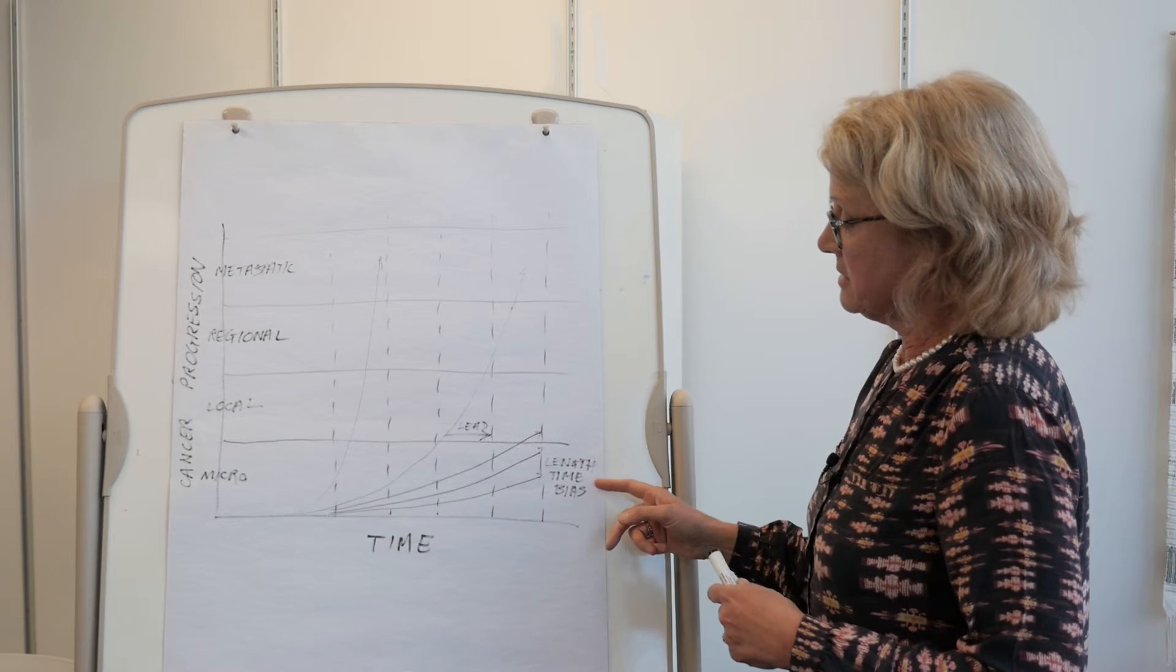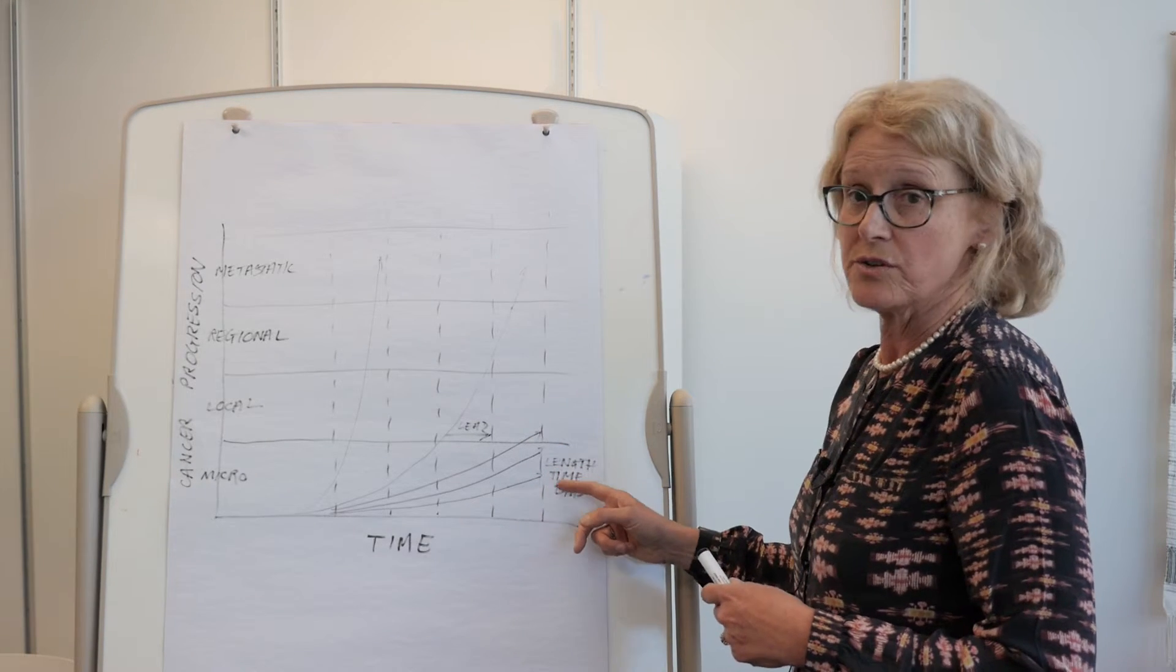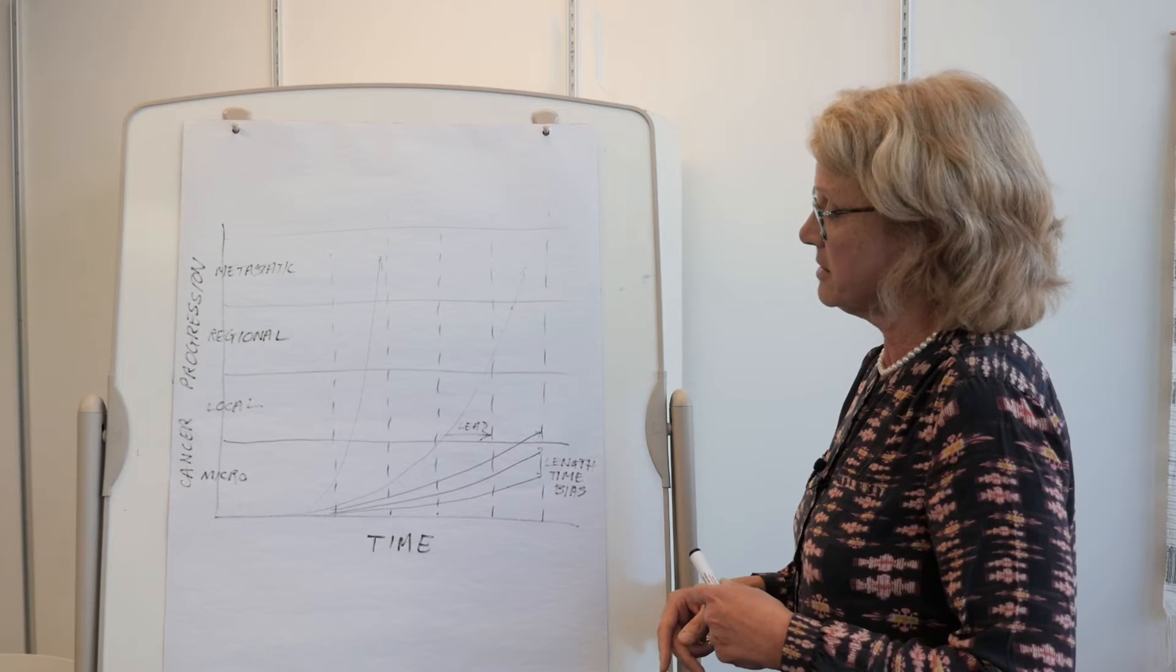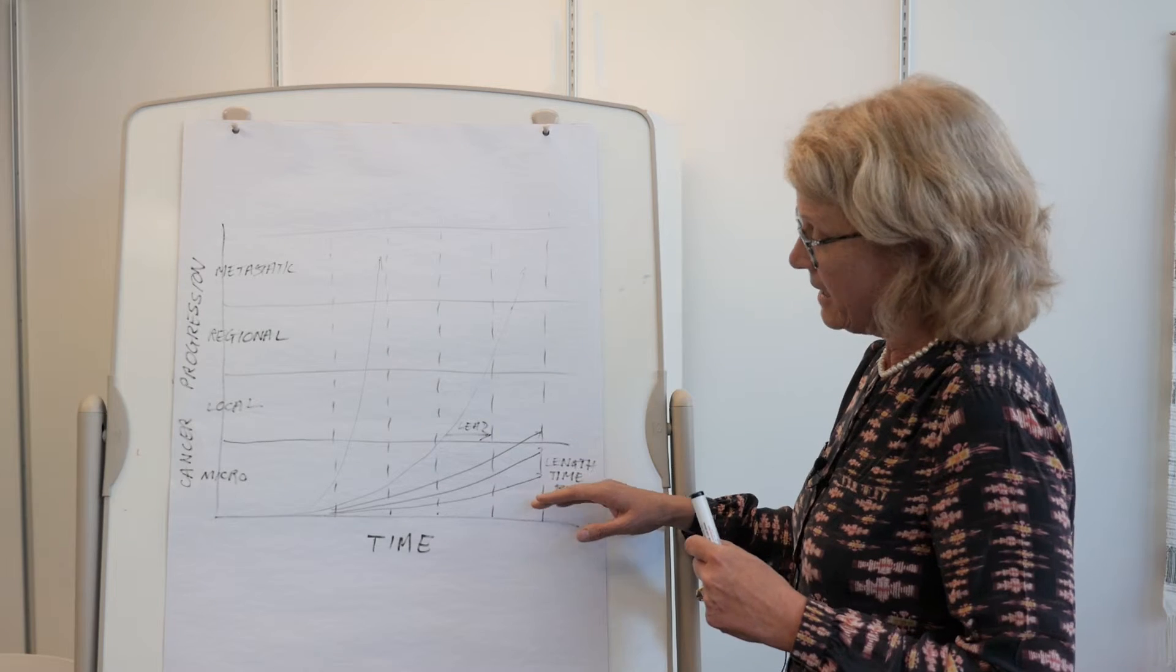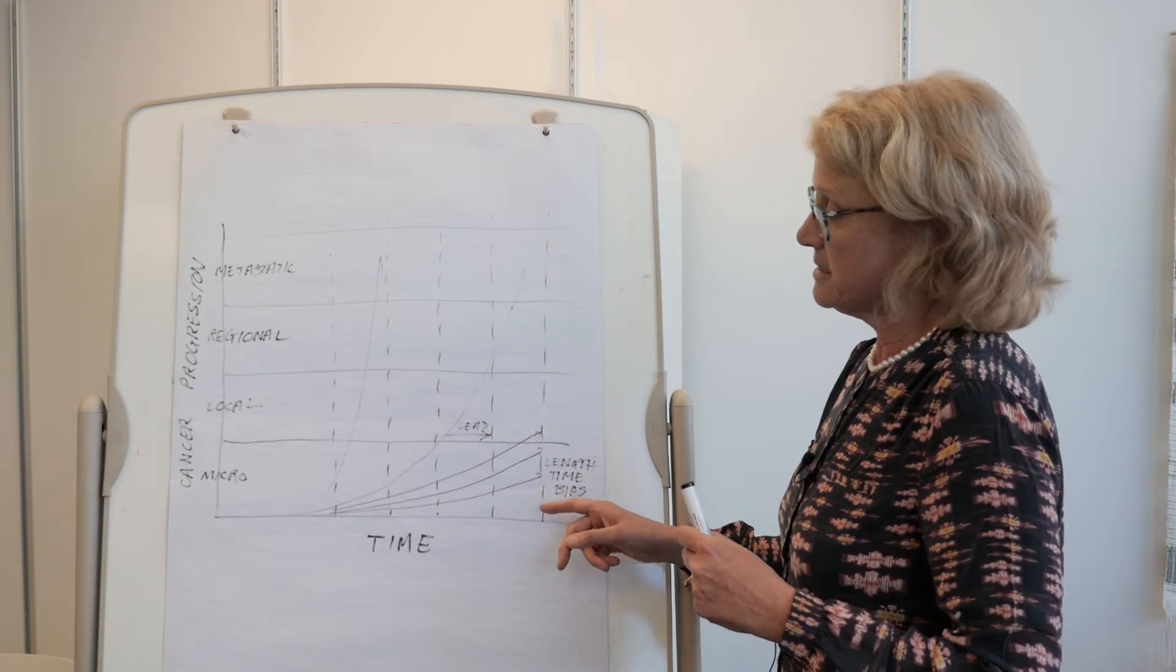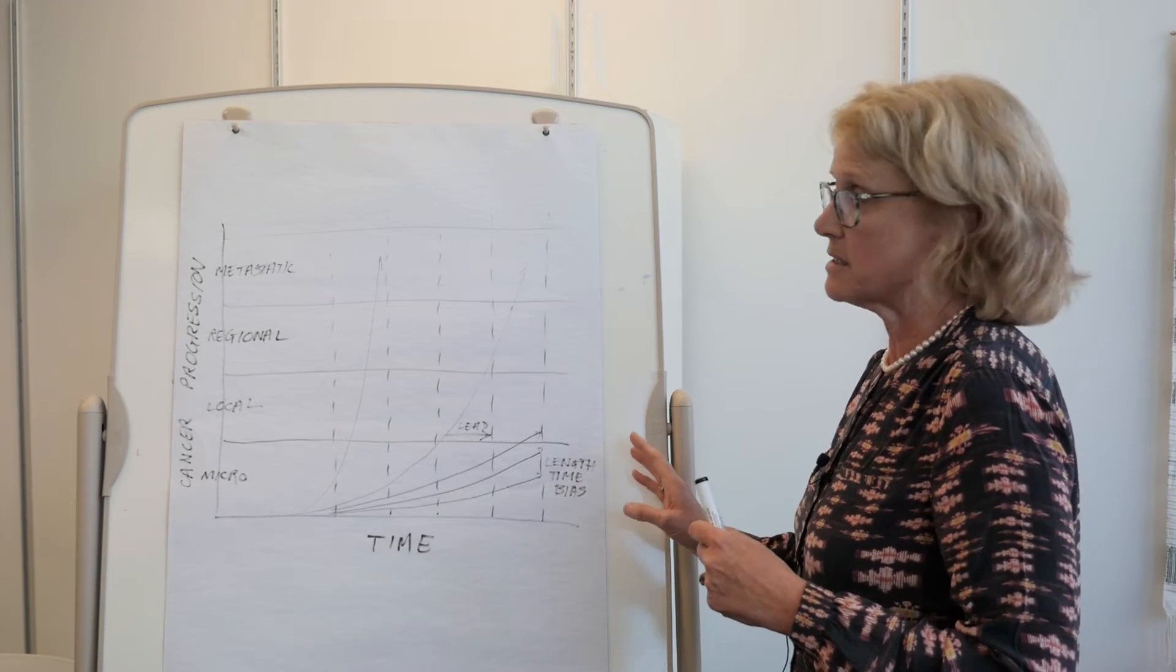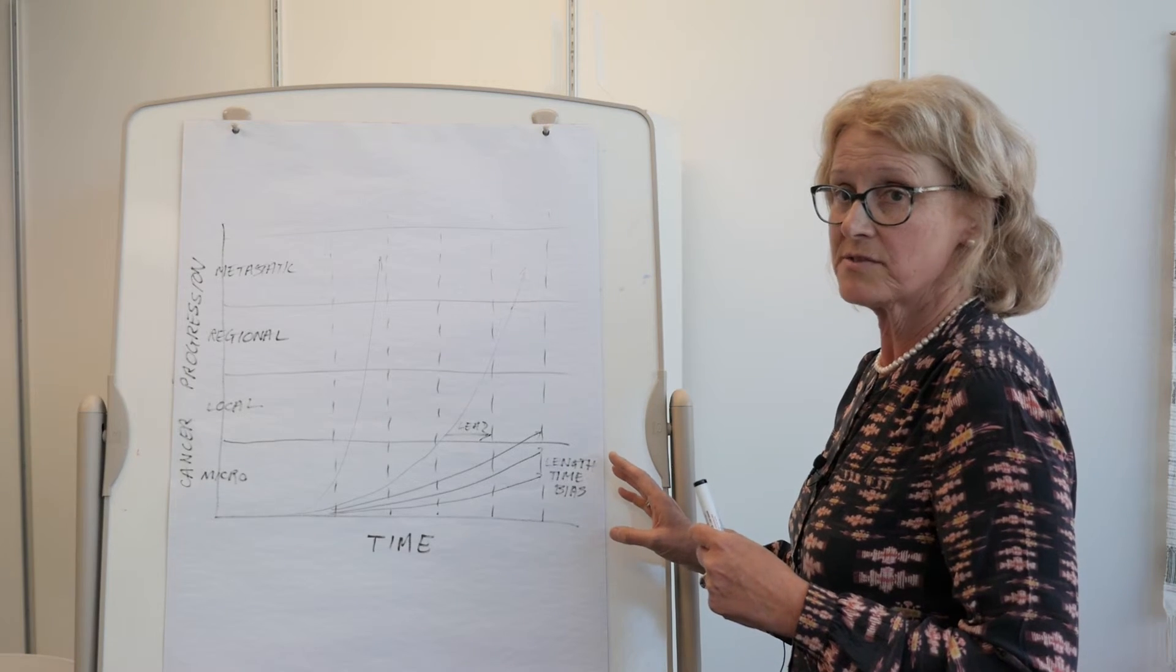The other thing to understand is that the ultimate extension of this concept of length time bias is what's called over diagnosis. That's where you actually detect by screening disease that would never have presented clinically in the person's lifetime if you hadn't screened them.